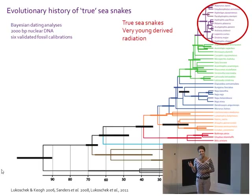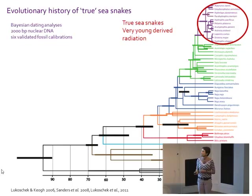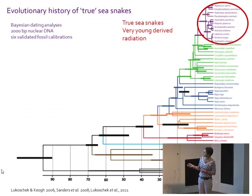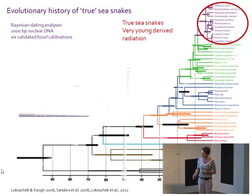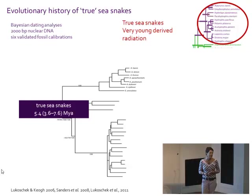This is a molecular dating phylogeny. All you really need to know from it is that it's been dated with fossil calibrations. The true sea snakes are up here; this is all other advanced snakes, terrestrial. Basically, they're a very young-derived radiation. The most recent common ancestor of the true sea snakes probably lived about five million years ago, which is young on an evolutionary perspective.